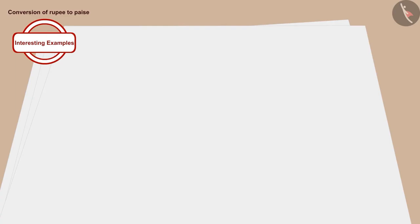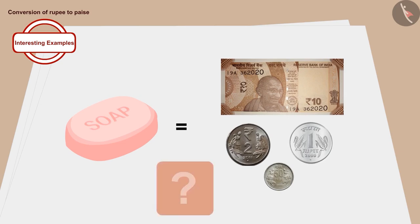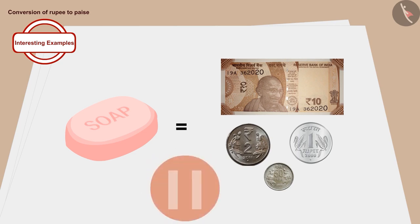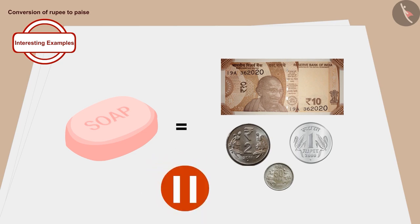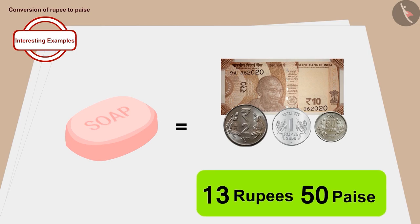Children, here the price of a soap is shown in notes and coins. Can you tell how much the soap costs? If you want, you can stop the video and find the answer. Well done, children! You have found the right answer! The soap costs 13 rupees 50 paise.